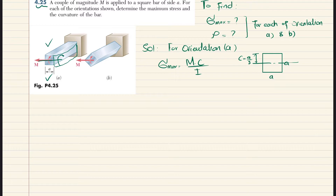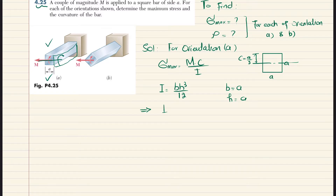The moment of inertia I equals (1/12) b·h³. Here b is also a and h is also a, so I becomes a·a³ divided by 12, which gives I equal to a⁴ over 12.